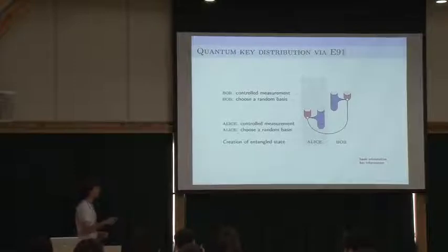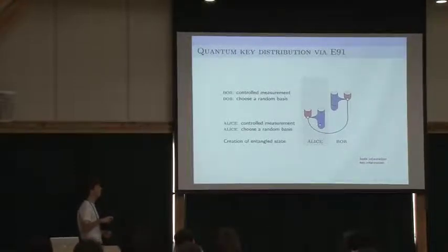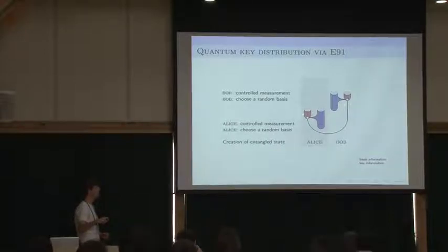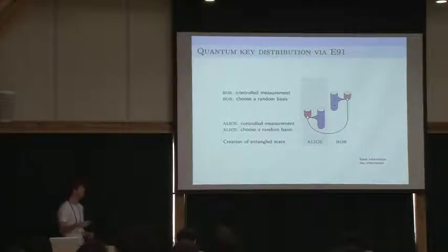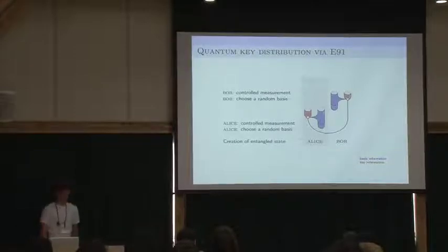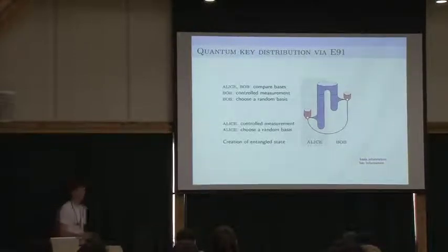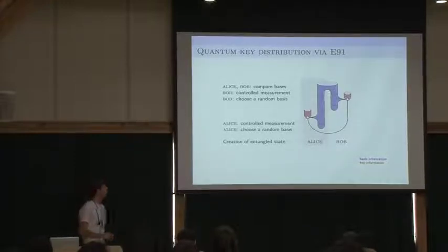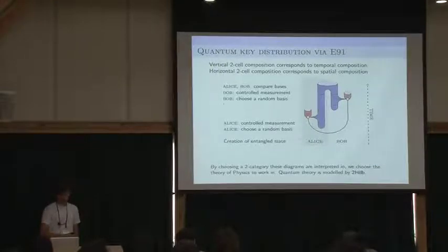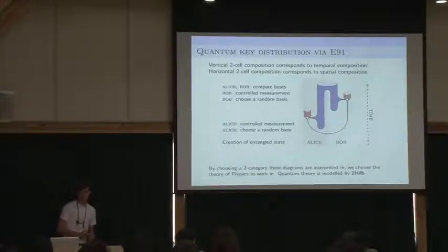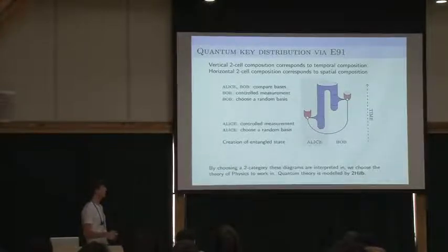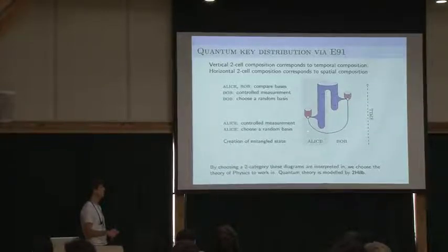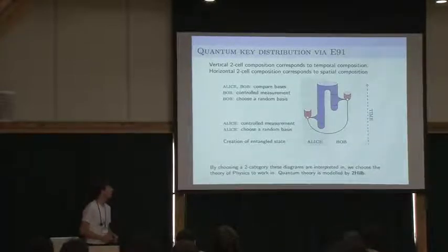And this corresponds to the choice of bases, and this choice of bases later influences the measurement operation that they perform. Over here you can see that the quantum system is transformed into classical information, and the choice of measurement that they perform is influenced by other classical information. As you can see, the blue information, this will be the basis information, and the red information, this is the key information. Both of them perform the same operation. And then later in the protocol what they do is they compare their basis information, so this is the operation over here.